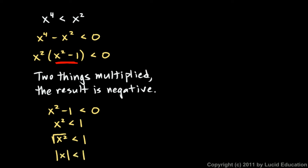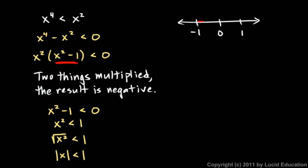The absolute value of x less than one means the distance from zero on the number line has to be less than one. If we draw a number line with zero, one, and negative one marked, x must be a distance from zero that is less than one, so it has to be in between negative one and one. This is a strict less than, not less than or equal to, so I don't include negative one and one — I'll use open parentheses.